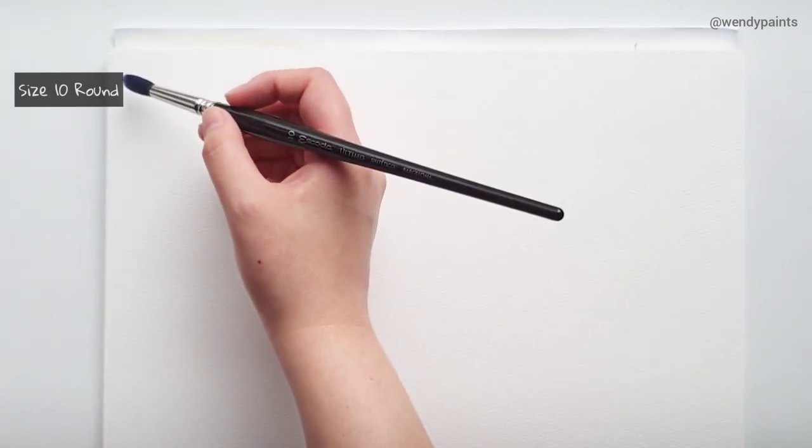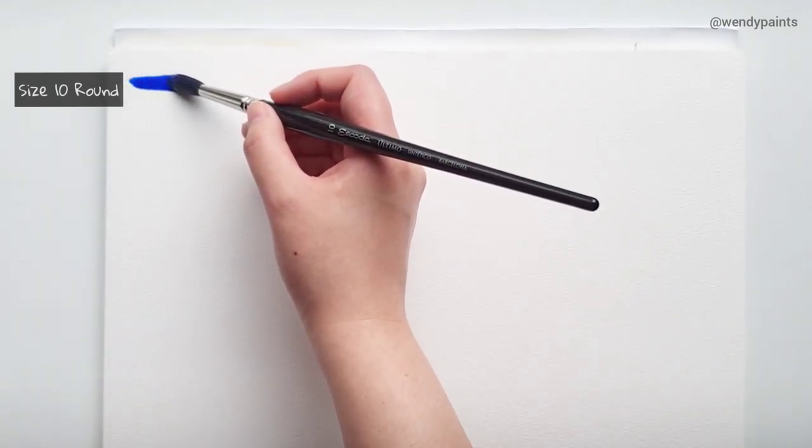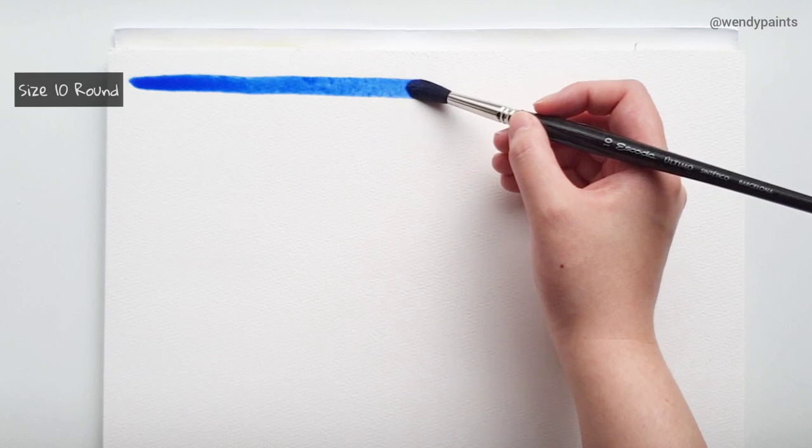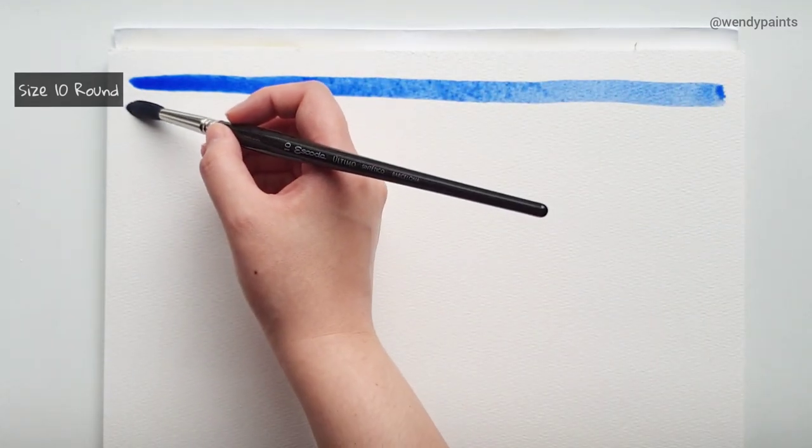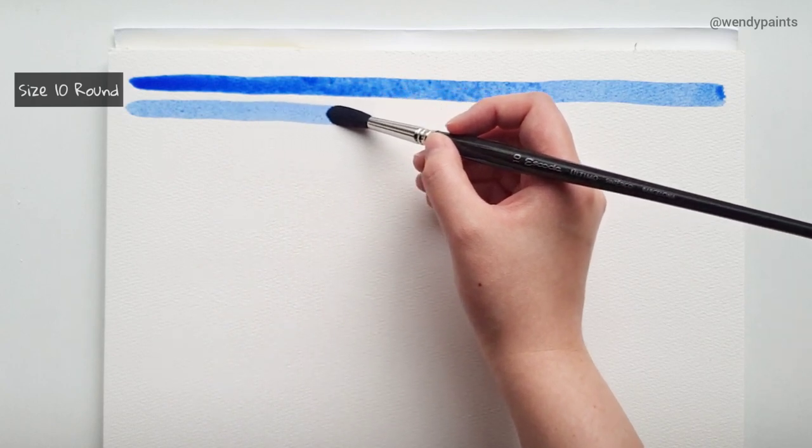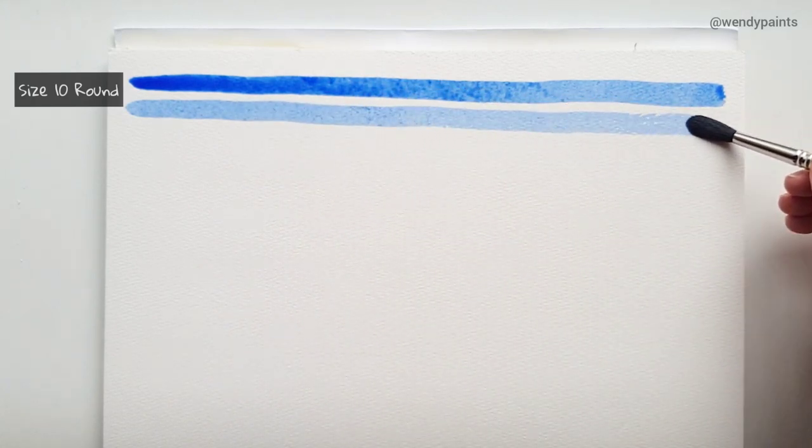First up, we're testing the size 10 round brush. For this experiment, the pressure that I'm applying while painting these lines is going to be consistent with how I normally use brushes of this size and I'm going to be doing the same across all three brushes.